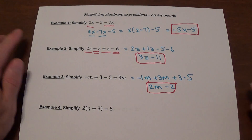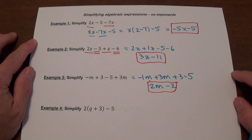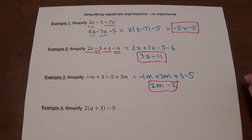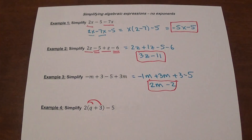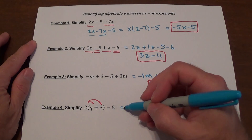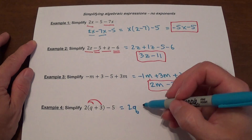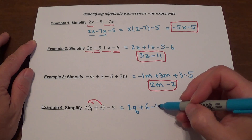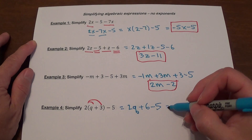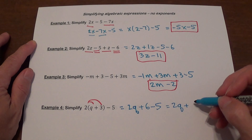Our next example involves parentheses. When you go with the order of operations, the operation inside parentheses needs to be done first. However, you can't do q plus 3 unless you have a value for q. So we use something called the distributive property, which tells you to take the number in front of the parentheses and distribute it over both terms inside. That gives us 2q, then 2 times positive 3 is 6, and then minus 5. There are two like terms: 6 minus 5 equals 1, and there is only one q, so the answer is 2q plus 1.